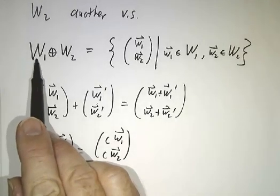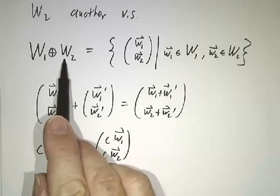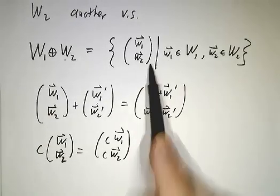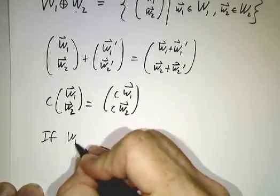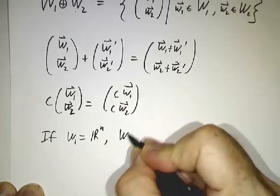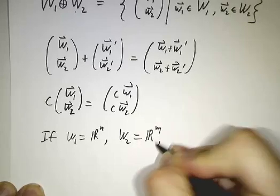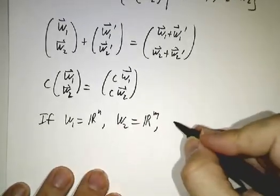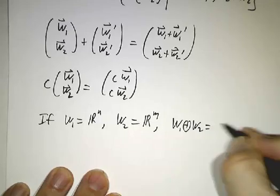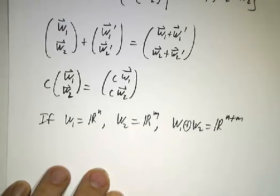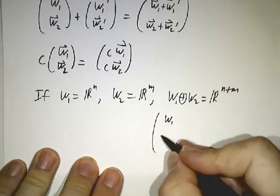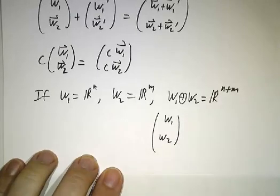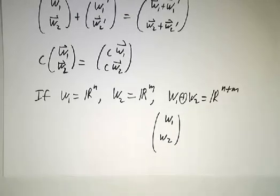If W₁ is ℝ and W₂ is ℝ, this is just ℝ². And slightly more generally, if W₁ is ℝⁿ and W₂ is ℝᵐ, then W₁ direct sum W₂ is just ℝⁿ⁺ᵐ. All we're doing is writing the first n coordinates up there, then the next m coordinates down there, and you play with them separately like that. So that's the external direct sum.